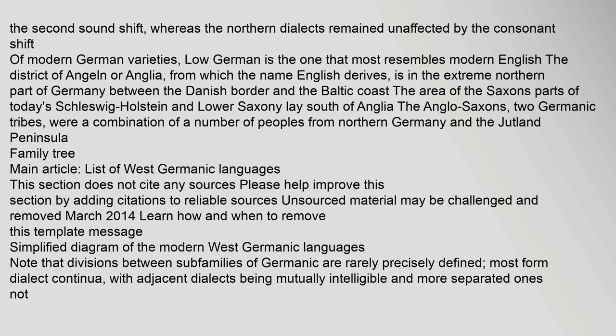Of modern German varieties, Low German is the one that most resembles modern English. The district of Angeln or Anglia, from which the name English derives, is in the extreme northern part of Germany between the Danish border and the Baltic coast. The area of the Saxons — parts of today's Schleswig-Holstein and Lower Saxony — lay south of Anglia. The Anglo-Saxons, two Germanic tribes, were a combination of a number of peoples from Northern Germany and the Jutland Peninsula.